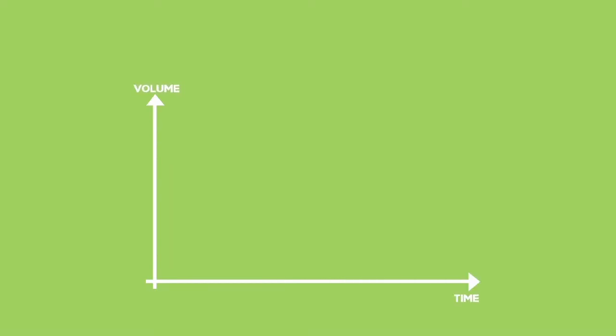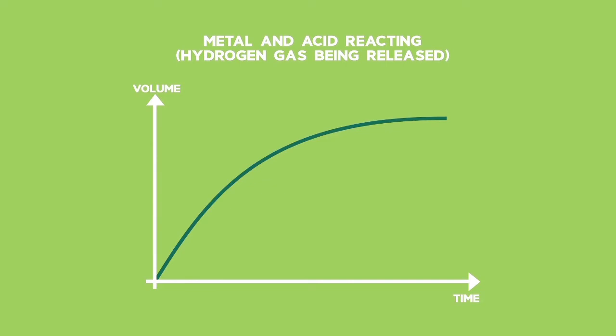If we look at the graph in more detail for an acid and metal reacting and hydrogen gas being released, the graph starts off steep as there are more particles in contact, thus a faster rate of reaction. As the reaction progresses, the slope decreases, as the rate decreases, as the reactants are being used up and there are fewer particles.